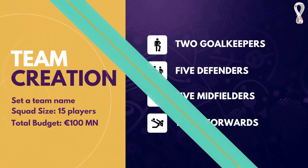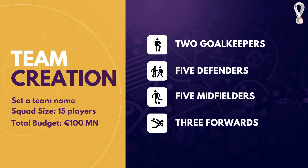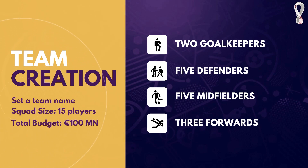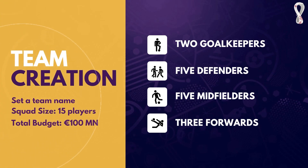Coming to the team creation process — when you first come onto the page, you'll be asked to select a team name. You can do that right away or at a later stage. To start building a team, you have an initial budget of 100 million and you need to build a team of 15 players.